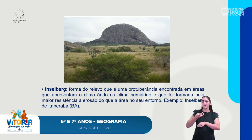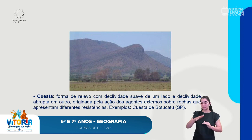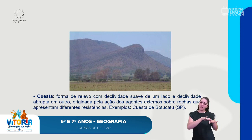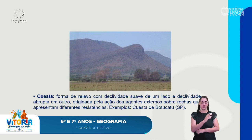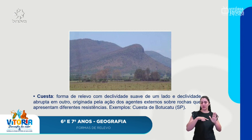Em Caruaru também temos um inselberg, uma área bastante alta, de rocha muito firme, onde até construções foram feitas. A cuesta é uma forma de relevo com declividade suave de um lado e declividade abrupta do outro. É originada pela ação dos agentes externos sobre rochas de diferentes resistências. Um exemplo é a Cuesta de Botucatu, em São Paulo: de um lado a rocha era menos resistente e houve maior desgaste; do outro, a rocha resistiu mais, resultando nessa forma assimétrica.